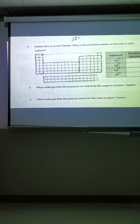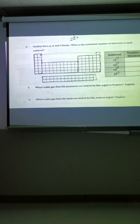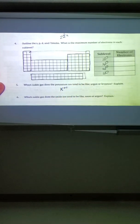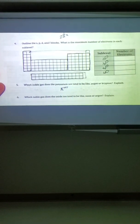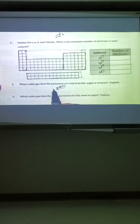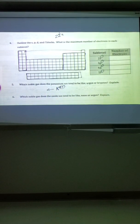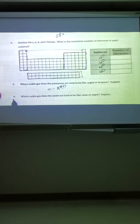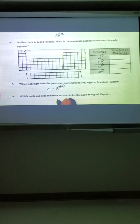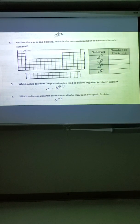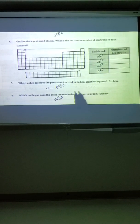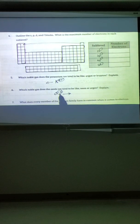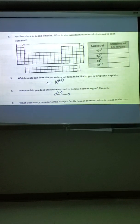Number 5 says, which noble gas does the potassium ion tend to be like? Well, potassium likes a plus 1. So if you look at potassium, but you remove one electron and move left in the periodic table, where does it take you? It's either going to be argon or krypton. Number 6 says, what if you're oxygen? Well, oxygen likes the oxide negative 2 ion. So if you have negative charge, you're going to move to the right. When you move two boxes to the right, do you land on neon or argon? And that'll answer that.